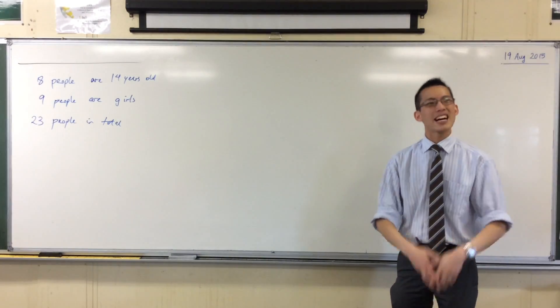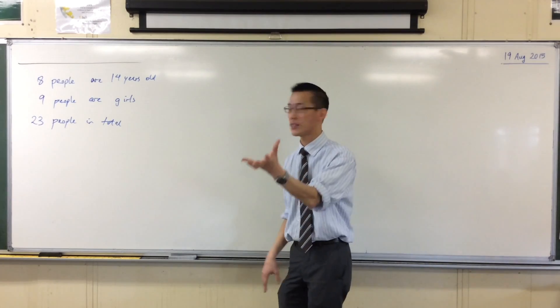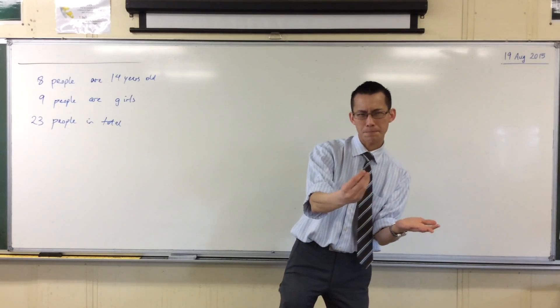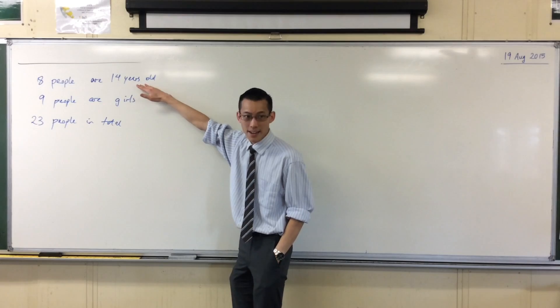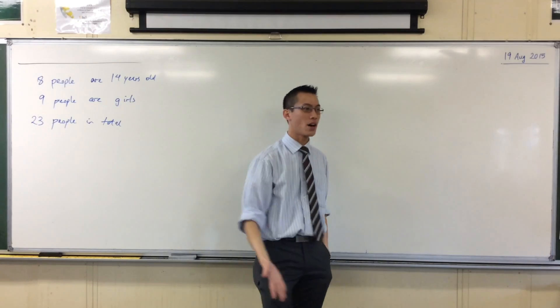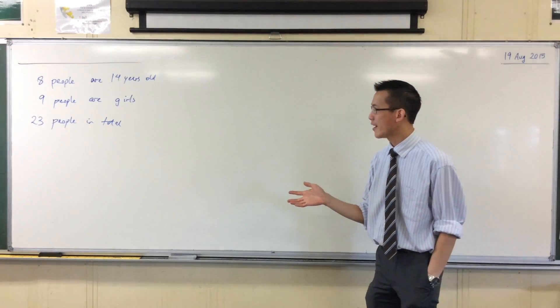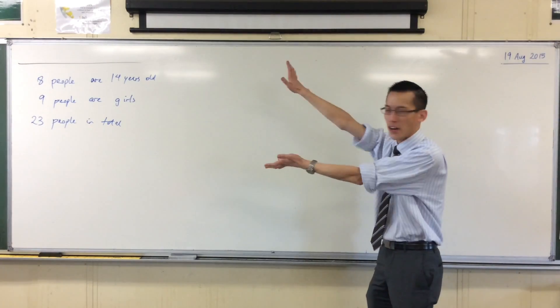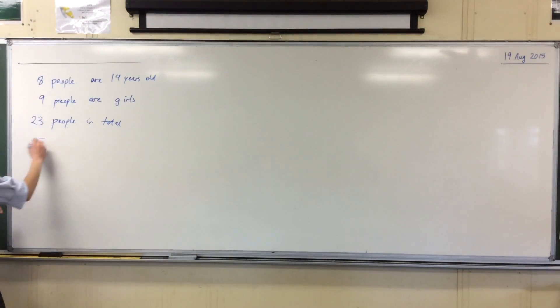But I can ask more interesting questions here that what's on the board will not necessarily help with. For instance, what's the probability that I'll pull out someone who is 14 and also a girl at the same time? That information is not there on the board. We have the information here in the class, but we haven't got it put down there. So we're going to use this tool. Draw for me a little box.